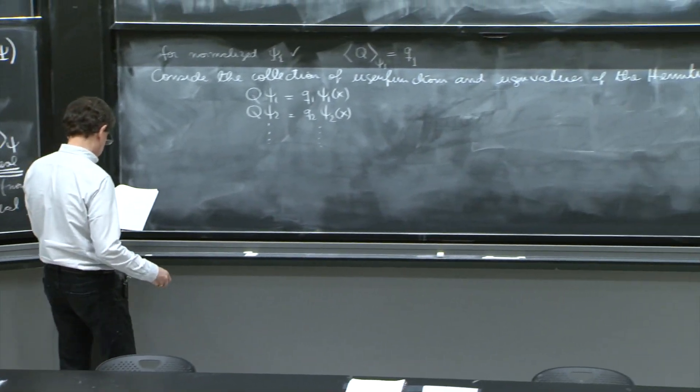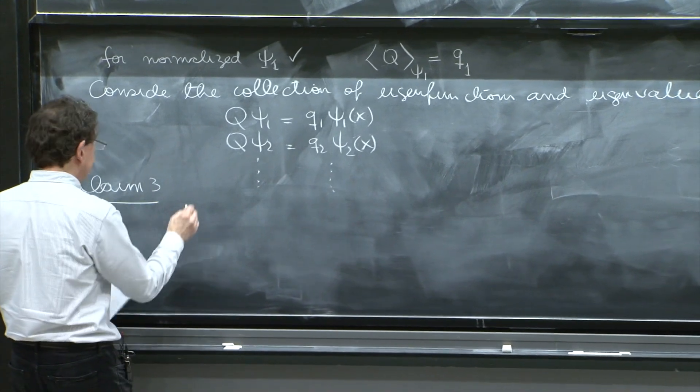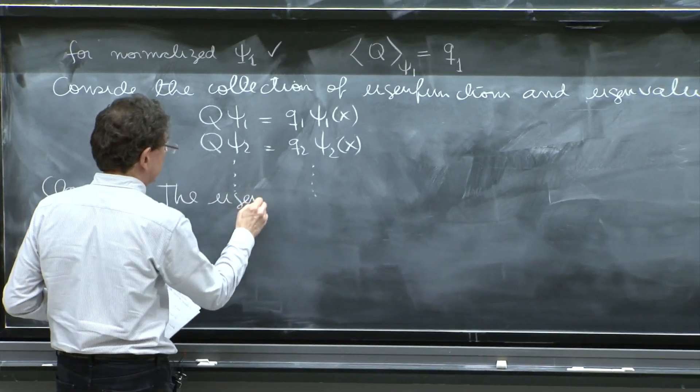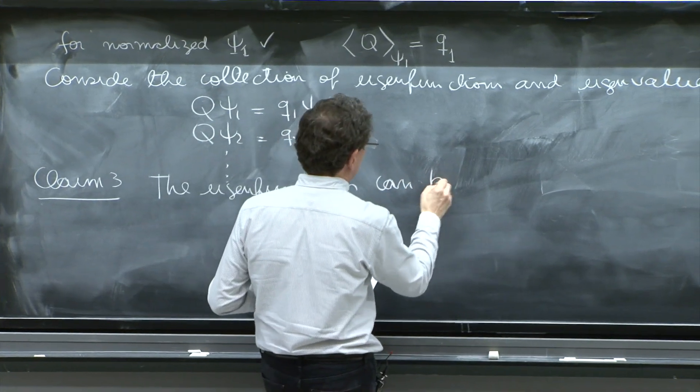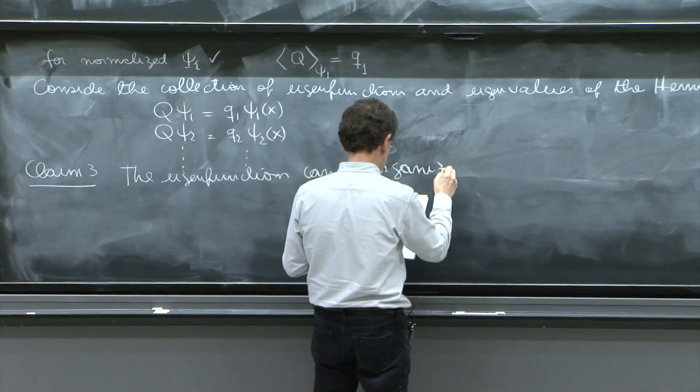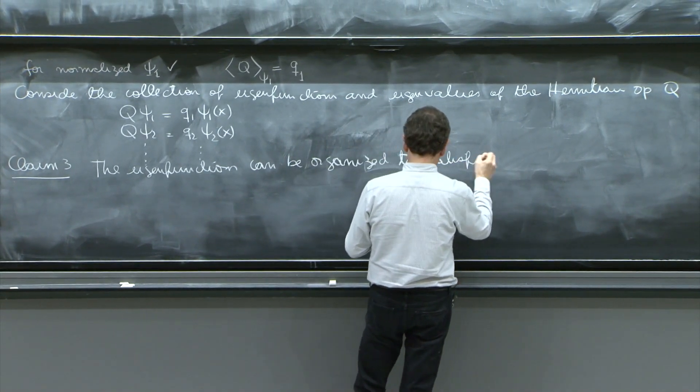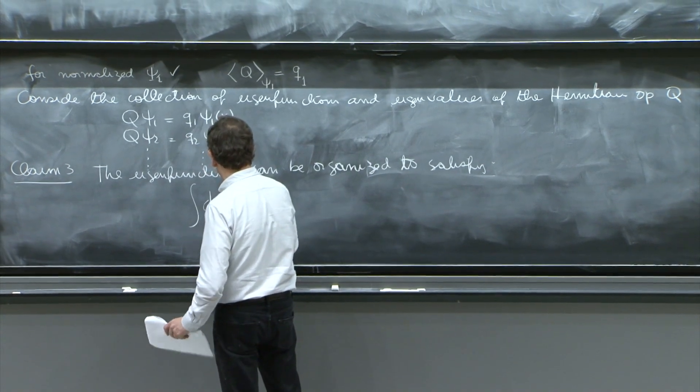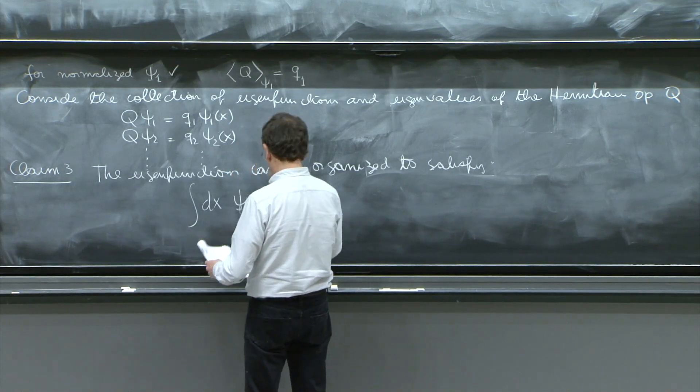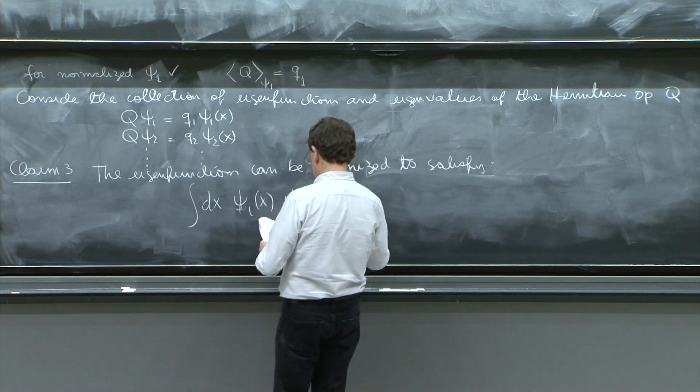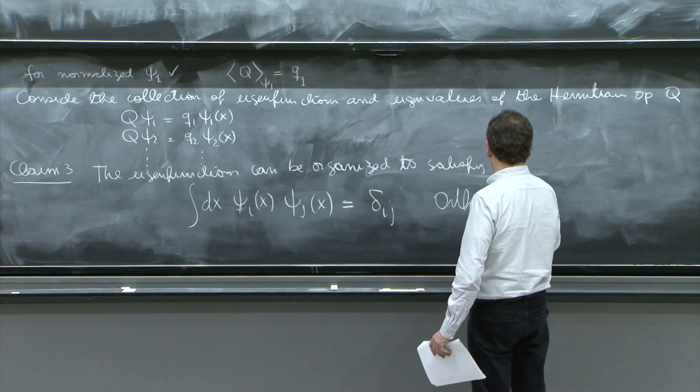So that is the setup. And here comes claim 3. The eigenfunctions can be organized to satisfy the following relation: integral dx psi i of x psi j of x equals delta ij. And this is called orthonormality.